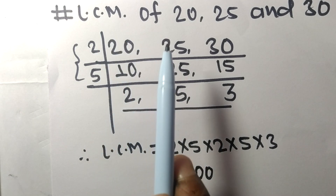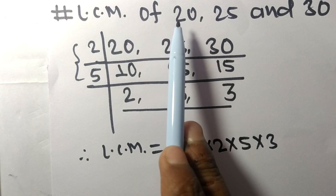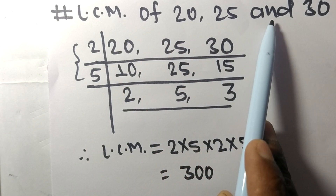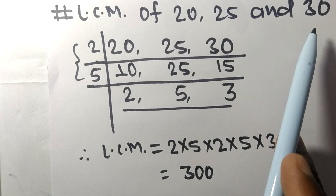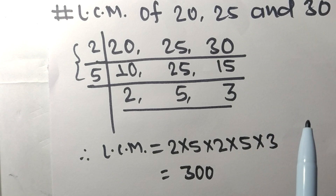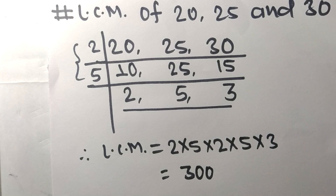So 300 is the LCM of 20, 25, and 30. That's all for today, thanks for watching.